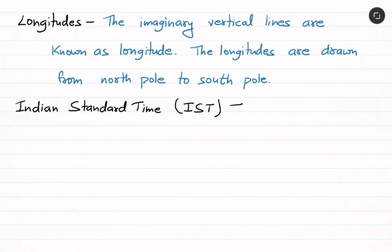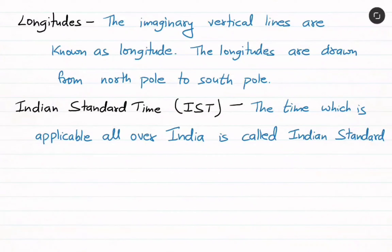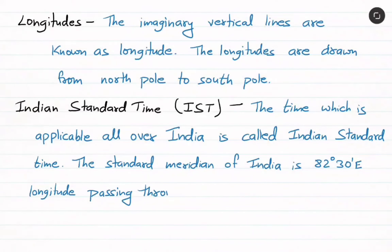Next, Indian Standard Time, that is IST. The time which is applicable all over India is called Indian Standard Time. The standard meridian of India is 82 degrees 30 minutes East, the longitude passing through Mirzapur in Uttar Pradesh. It is 5 and a half hours ahead of Greenwich Mean Time.